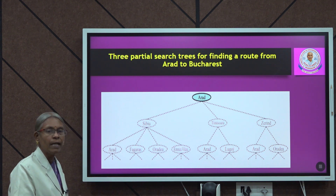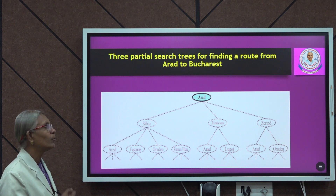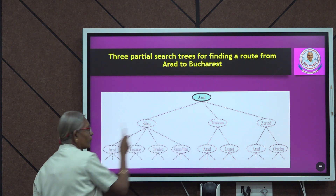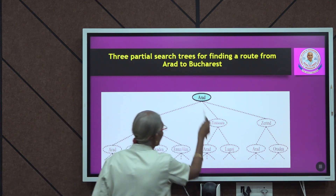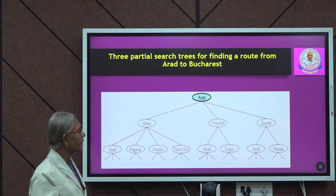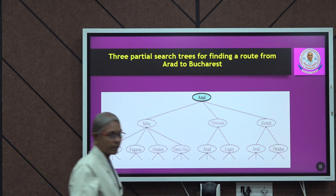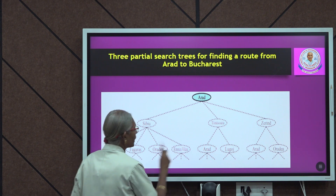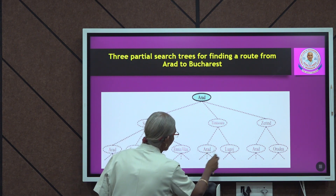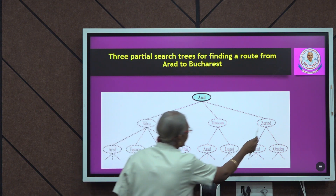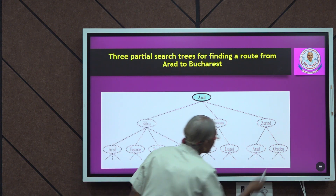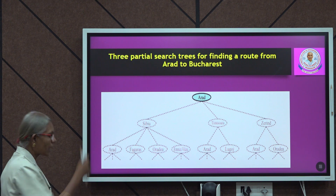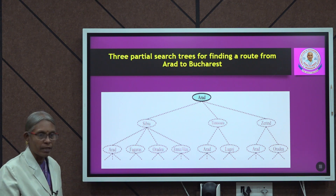We start from Arad city and want to reach Bucharest. When I expand Arad, I can go to Sibiu, or I can go to Timisoara, or I can go to Zerind. From Sibiu I can reach many cities, from Timisoara I can go to Arad or Lugoj, and from Zerind I can go to Arad or Oradea. This is one partial search tree starting from Arad trying to reach Bucharest.